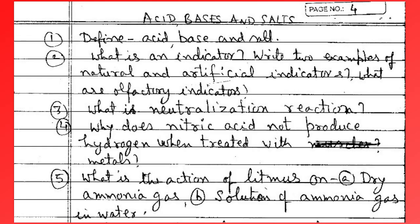Then we start with the chapter on acid, base, and salt. Define acid, base, and salt. Next question: what is an indicator? Write two examples of natural and artificial indicators. What are factory indicators? What do you mean by neutralization reaction?